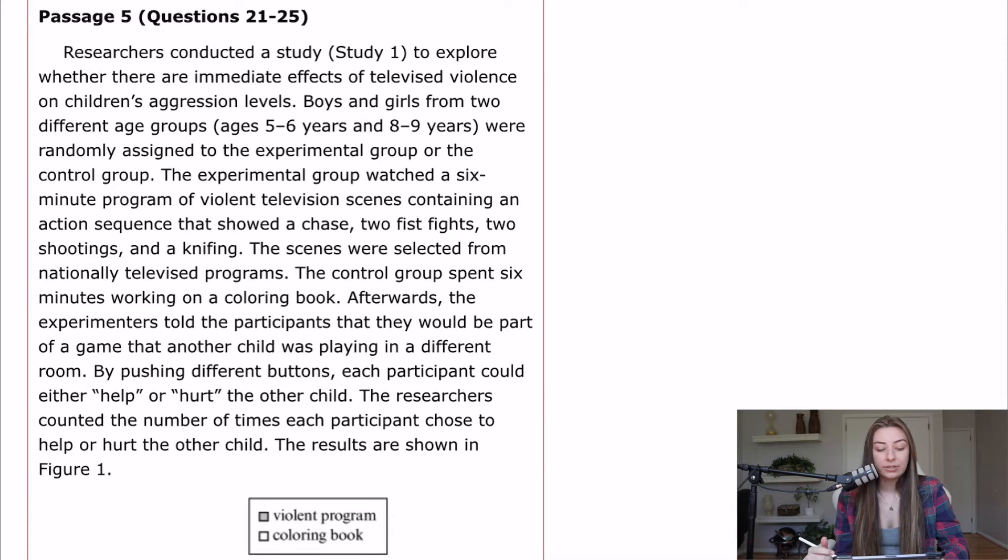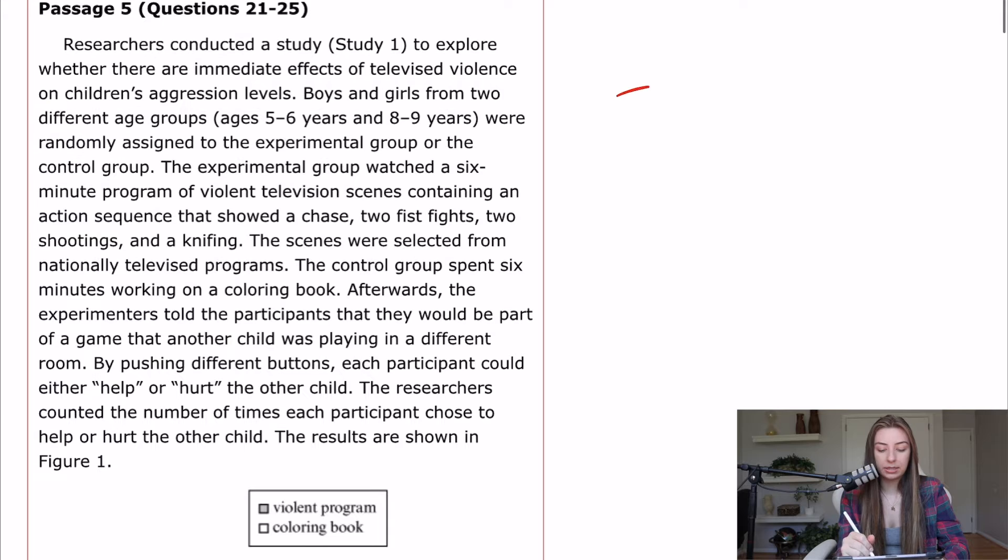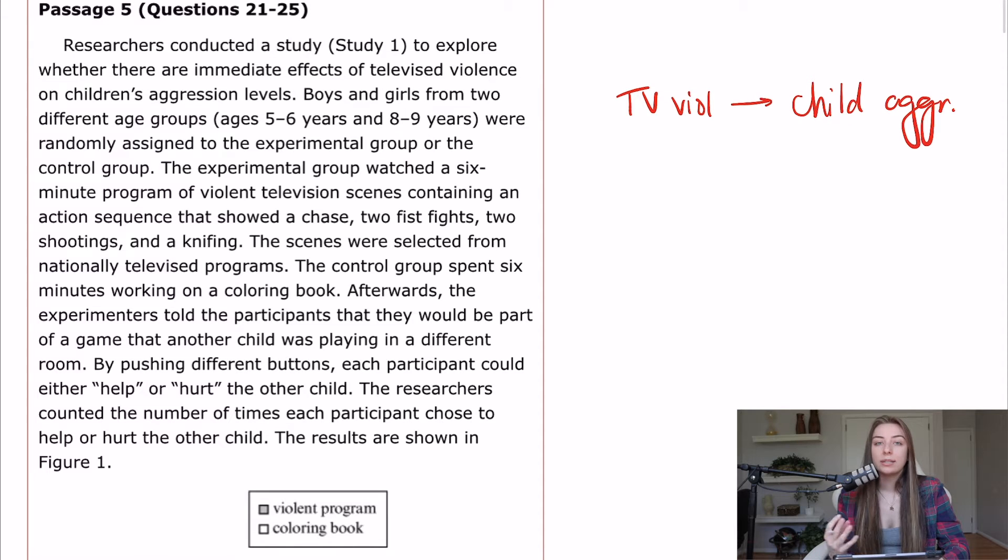So let's get into this thing and start flow charting it. Researchers conducted a study, study one, to explore whether there are immediate effects of televised violence on children's aggression levels. So we're looking at TV violence on children's aggression. I like to write down my variables in psych-soc because a lot of those research methods and hypothesis kind of questions will pop up. Boys and girls from two different age groups, ages five to six years and eight to nine years, that's probably foreshadowing. Anything in parentheses is often foreshadowing. Different age groups were randomly assigned to the experimental group or the control group.